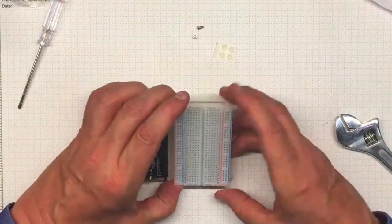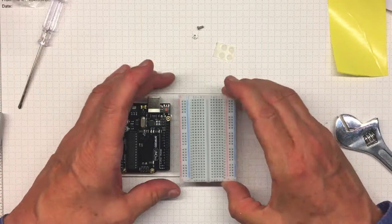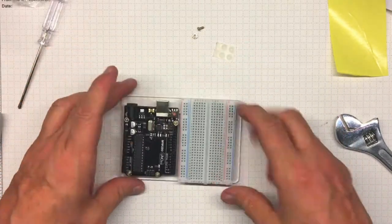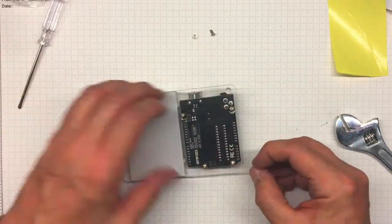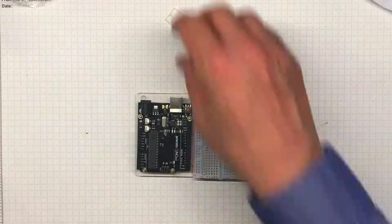I was careful to get the breadboard lined up to the mounting board and to make sure that the letters and numbers were right-side up. Rubber feet at the corners will keep it from sliding around on the desktop when you're working in the lab.